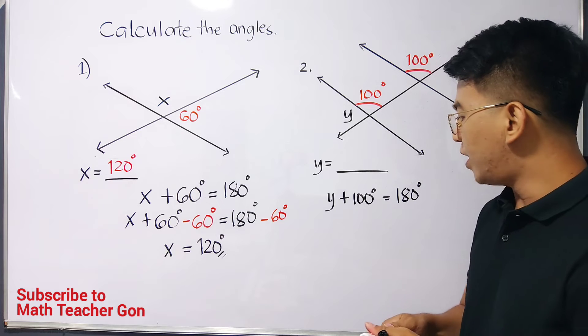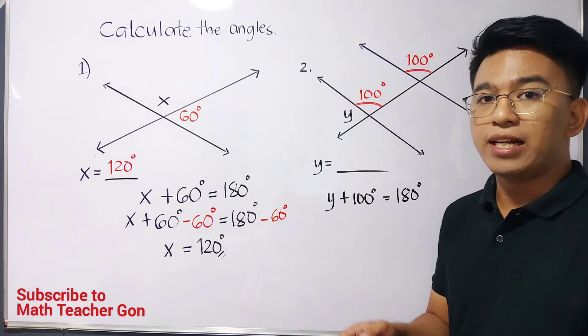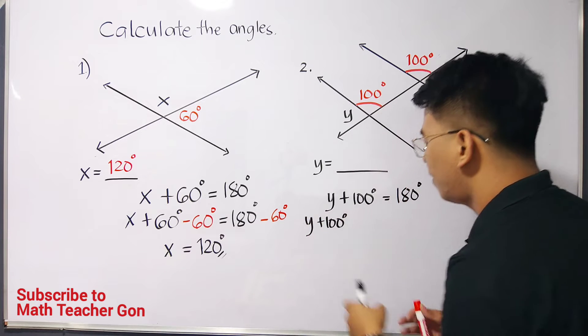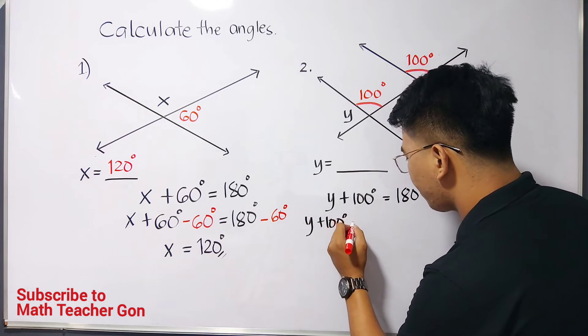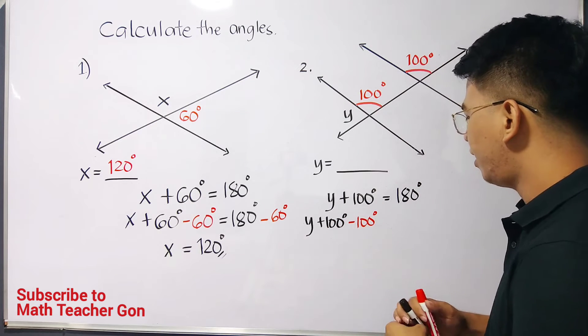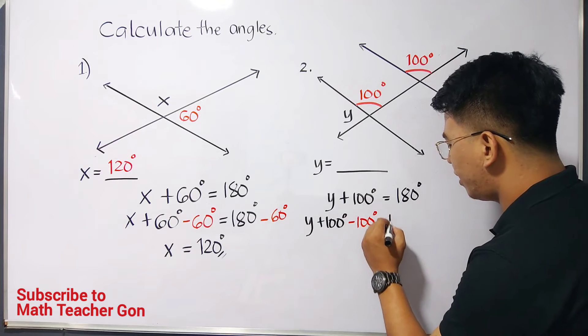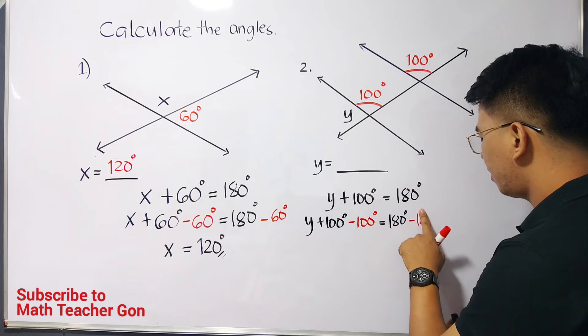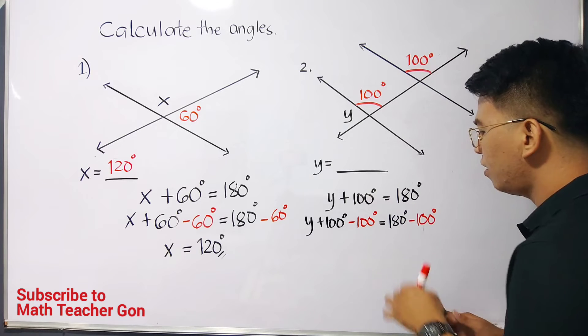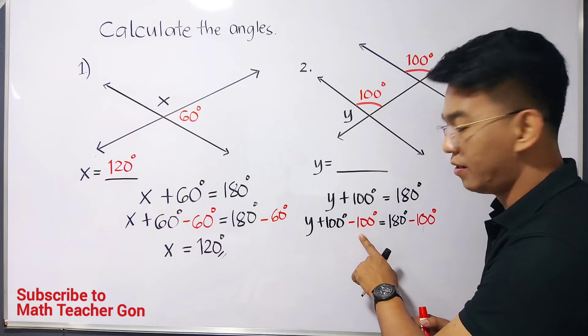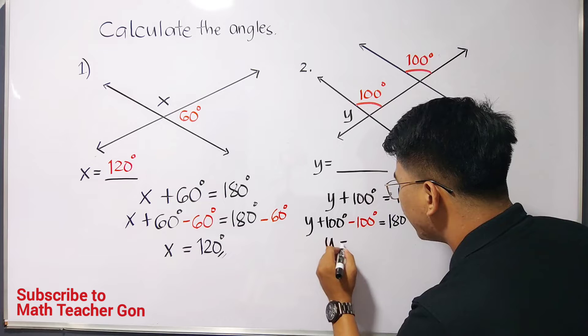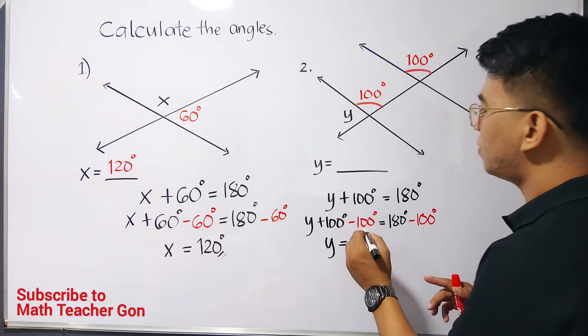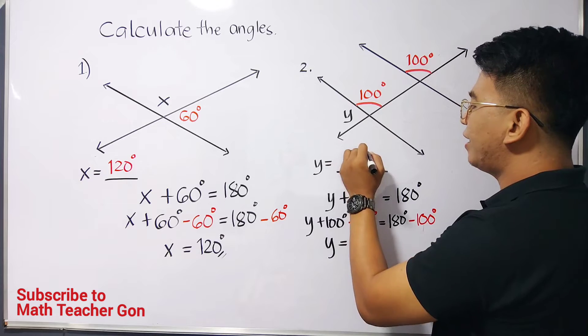We have to add them that y is equal to 100 degrees sorry, y plus 100 degrees is equal to 180 degrees. Same solution, we need to eliminate positive 100 or 100 degrees simply by subtracting both sides of the equation by 100 degrees. So, we have here y plus 100 degrees minus 100 degrees is equal to 180 degrees minus 100 degrees. Now, simplifying this, this will become zero. This is y. So, we have here y is equal to 180 degrees minus 100 degrees and that would be 80 degrees. So, the value of y here or this angle measures 80 degrees.